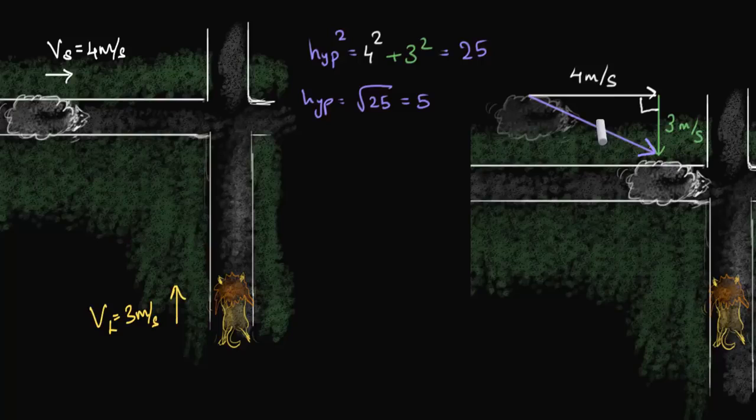Which means this length is 5 meters. And this happened in one second, right? So we could say it's 5 meters per second. This means that the lion sees the sheep traveling 5 meters this way in one second. In other words, the relative velocity of the sheep, as seen from the lion's perspective, is 5 meters per second this way.